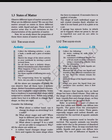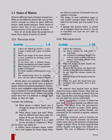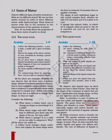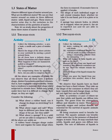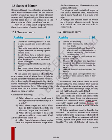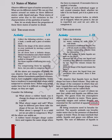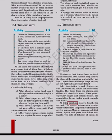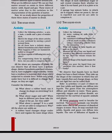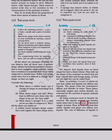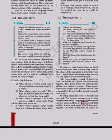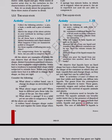We observe that liquids have no fixed shape but have a fixed volume. They take up the shape of the container in which they are kept. Liquids flow and change shape, so they are not rigid but can be called fluid. Refer to activities 1.4 and 1.5 where we saw that solids and liquids can diffuse into liquids. The gases from the atmosphere diffuse and dissolve in water. These gases, especially oxygen and carbon dioxide, are essential for the survival of aquatic animals and plants.